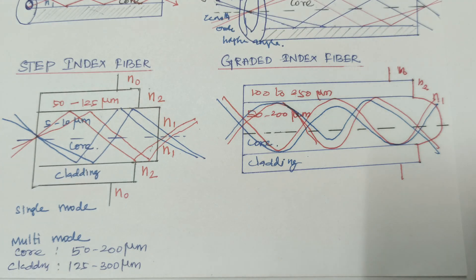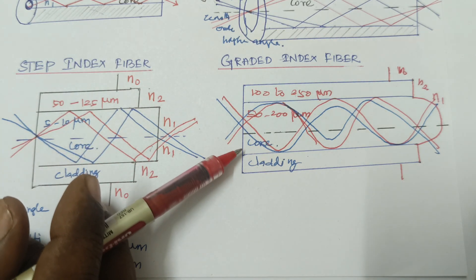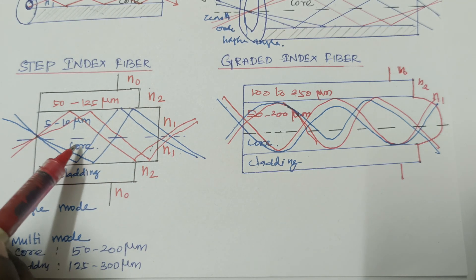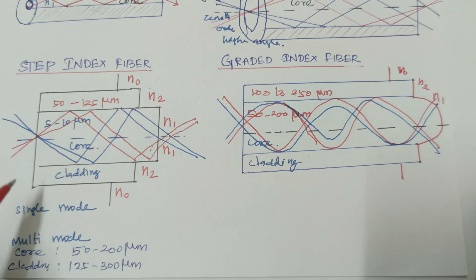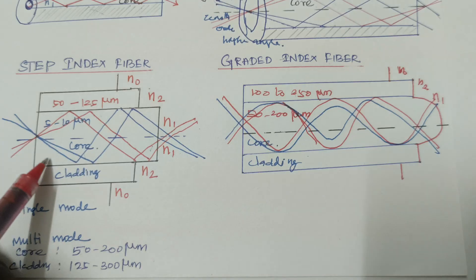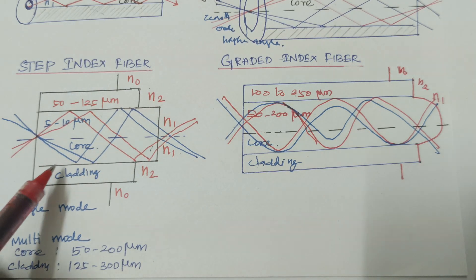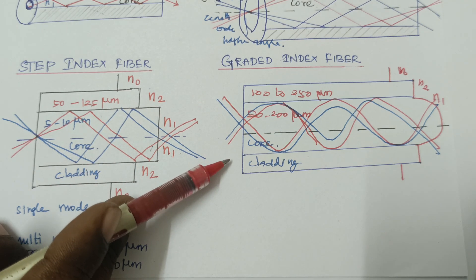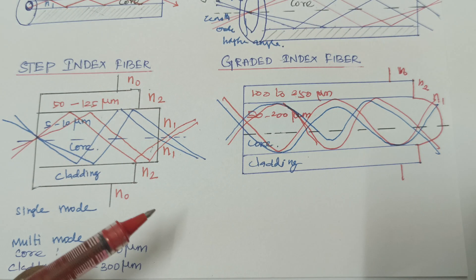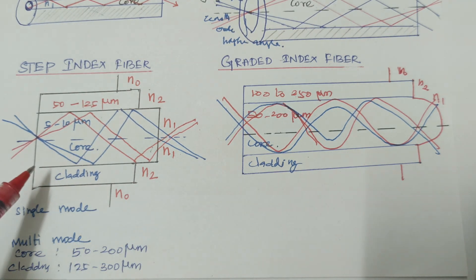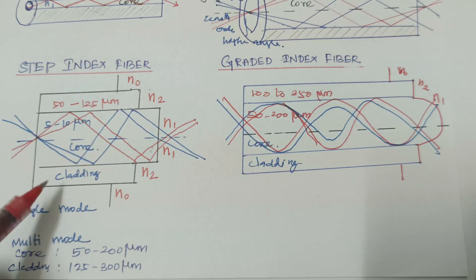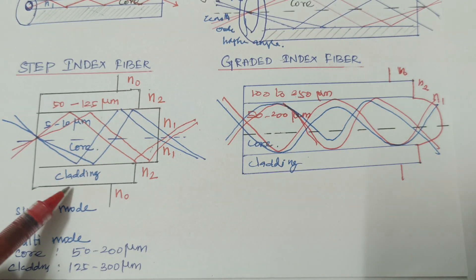In the case of graded index fiber, there is less intermodal dispersion. For step index fiber, the data transmission efficiency is less and the bandwidth is very low compared to graded index fiber. That is why graded index fiber is mostly used for long or medium distance data transmission. The application of step index fiber is in data links which require low bandwidth.